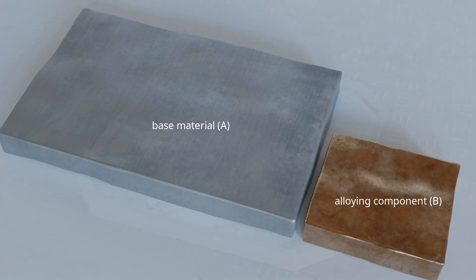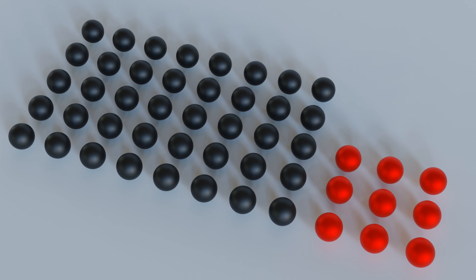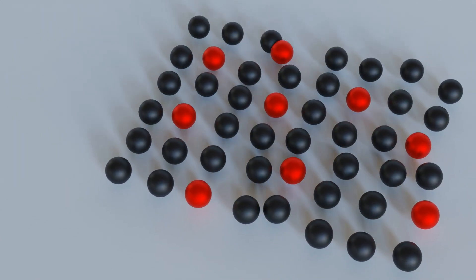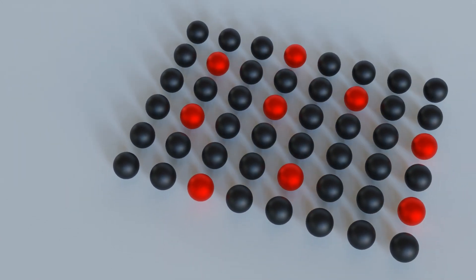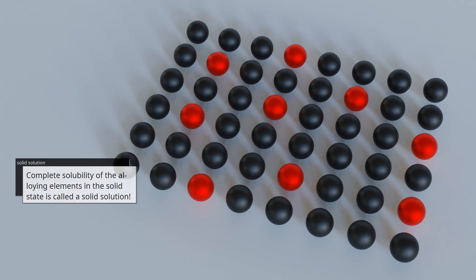Let us first consider alloys that are completely miscible in the solid state. This means that the two components of an alloy can be completely dissolved in each other. The atoms of the alloying component are completely incorporated into the host lattice of the base substance, and the different atoms form a common lattice structure. Such a mixed atomic crystal structure is called a solid solution. Complete solubility of the alloying elements in the solid state is called a solid solution.